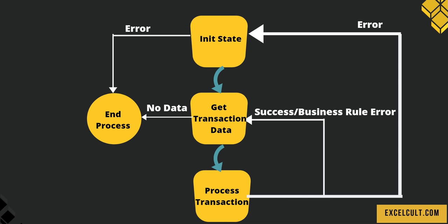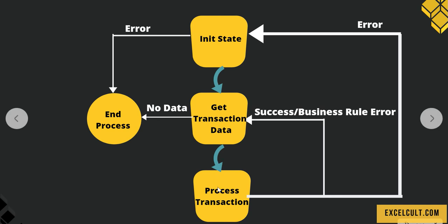There are three possibilities here. If a particular transaction was successful, then it will move to GetTransactionData and look for the next available transaction. It will again send that to ProcessTransaction — and here is the loop that will try to process all the transactions available in the queue.